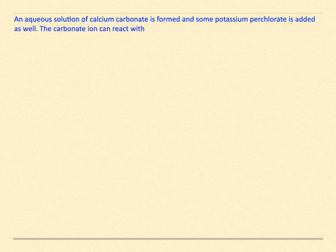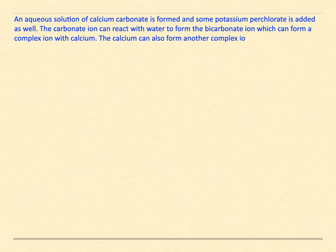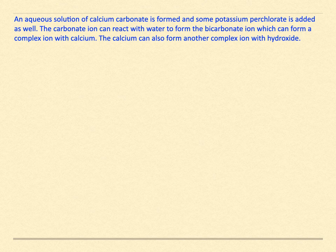Here's another example. An aqueous solution of calcium carbonate is formed, and some potassium perchlorate is added as well. The carbonate ion can react with water to form the bicarbonate ion, which can form a complex ion with calcium. The calcium can also form another complex ion with hydroxide. Here are all of the species you need to consider.